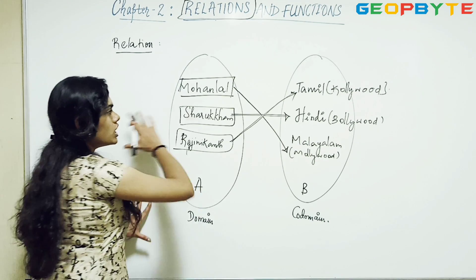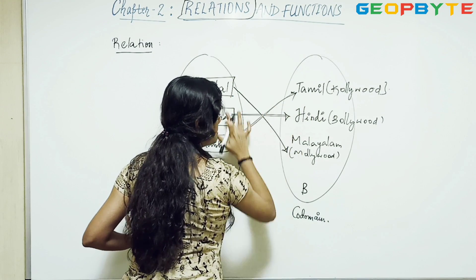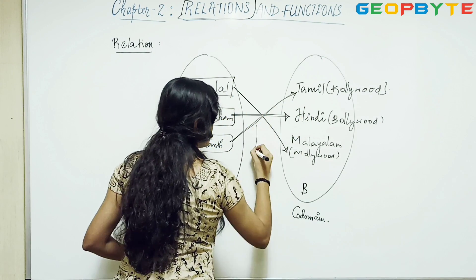So now in mathematics, I call this set A as the domain and set B as the codomain. And all the elements of the sets I call as range.